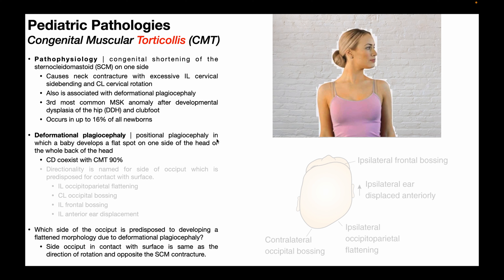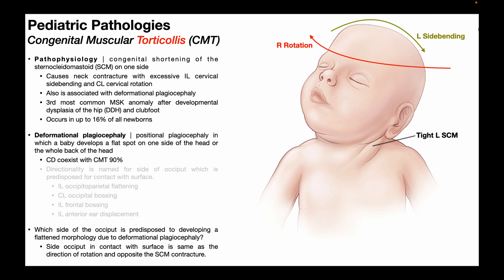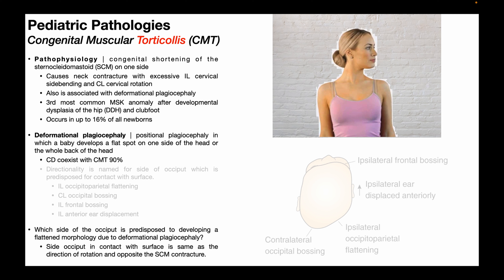About 90% of infants with CMT also develop cranial deformation. The most common type is deformational plagiocephaly — a positional plagiocephaly where a baby develops a flat spot on one side of the head or the entire back of the head. This is due to the chronic positioning seen in torticollis, such as left side bending and right rotation, and it really has more to do with the rotation component.